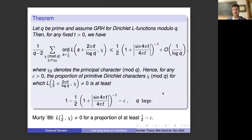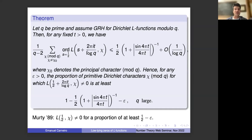The first theorem I want to show: let q be a prime and assume the generalized Riemann hypothesis for Dirichlet L-functions modulo q. Fix a height t, and sum over all characters modulo q the order of vanishing of the Dirichlet L-function L at the point one-half plus two pi i t over log q. Averaging over primitive L-functions by dividing by q minus two, the average order of vanishing at the given height is no more than one-half times one plus sine(4 pi t) over (4 pi t), inverse, plus an error term.